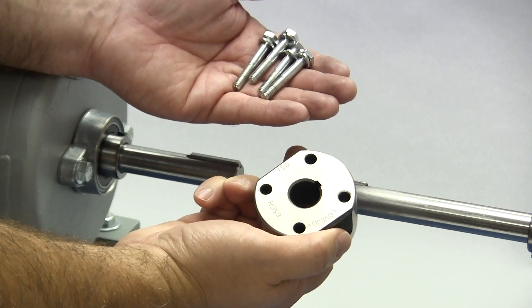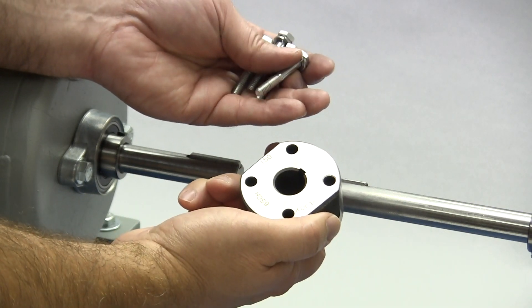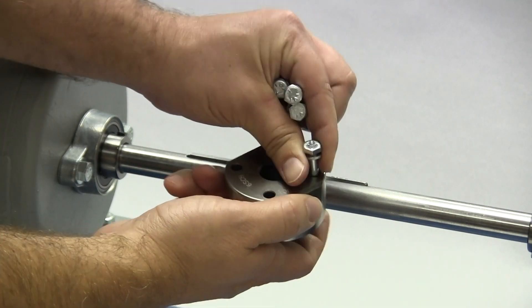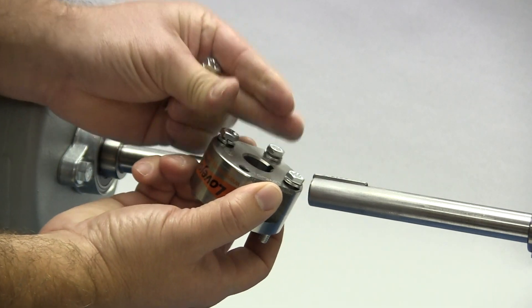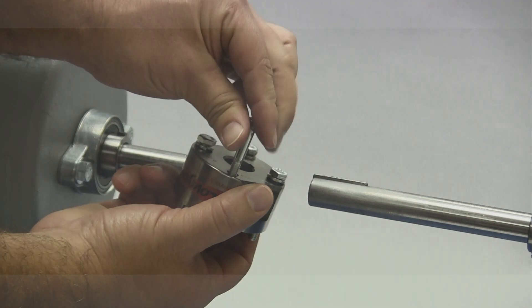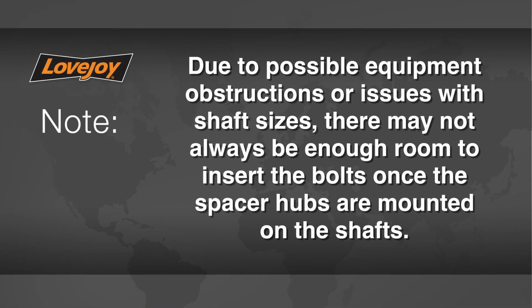Insert the four bolts with lock washers through the spacer hub starting opposite the piloted end of the hub. It is important that the bolts are installed in the spacer hubs prior to being placed on the shafts. Due to possible equipment obstructions or issues with shaft sizes, there may not always be enough room to insert the bolts once the spacer hubs are mounted on the shafts.